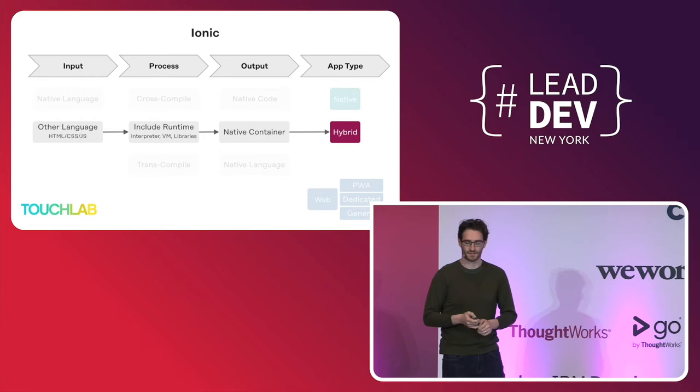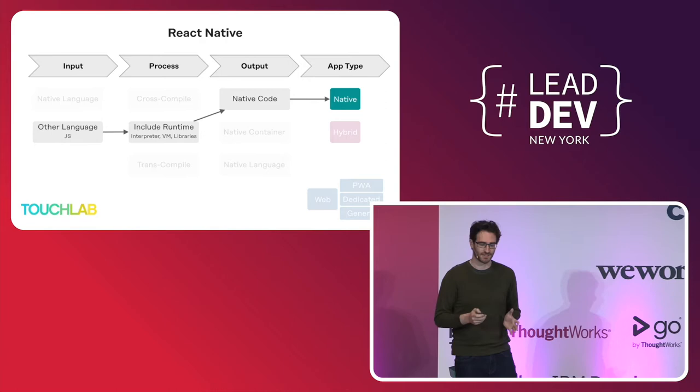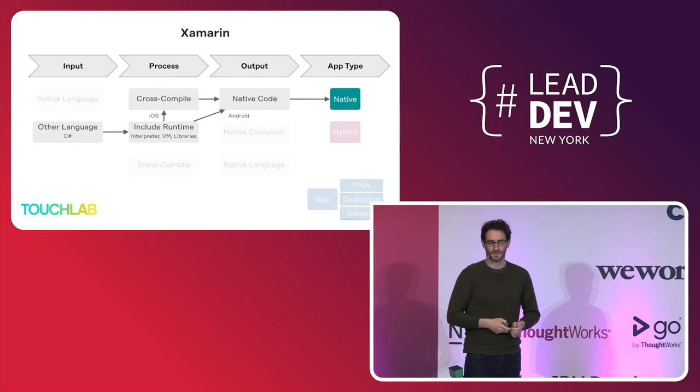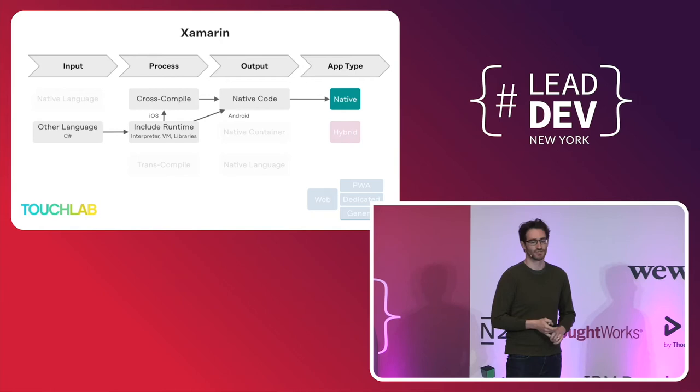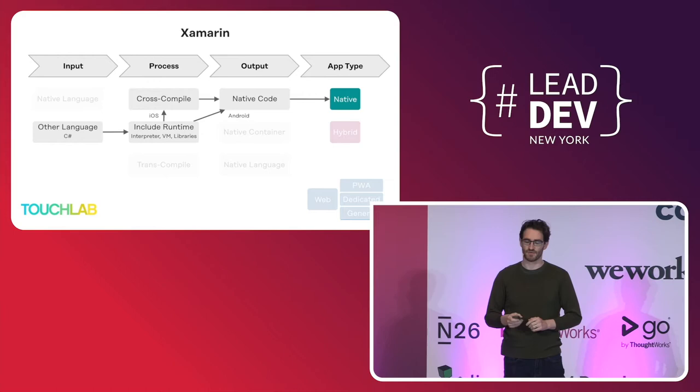React Native takes React, which worked really well on web, and makes it work on mobile better than hybrid apps. You're still developing in JavaScript. The runtime provides widgets and all the React magic they're very good at, and then native code is output at runtime by JavaScript Core. With Xamarin, you write your code in C#, and it gets processed to include the .NET runtime. On iOS, it's all compiled ahead of time because iOS doesn't allow third-party execution engines. On Android, the MonoVM is included in the distribution, so it can just-in-time compile to native code at runtime.